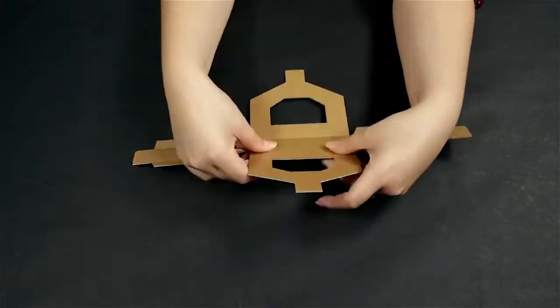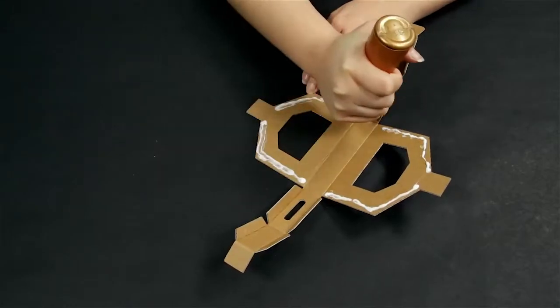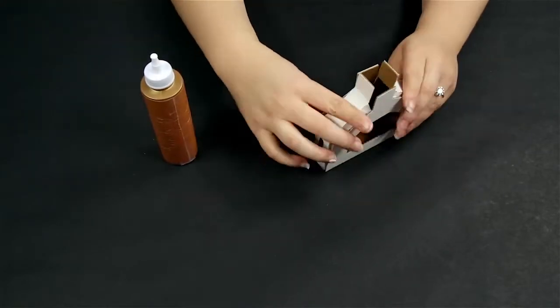Step 3: Fold up the sides of part A. Glue and or tape together to form the handle.